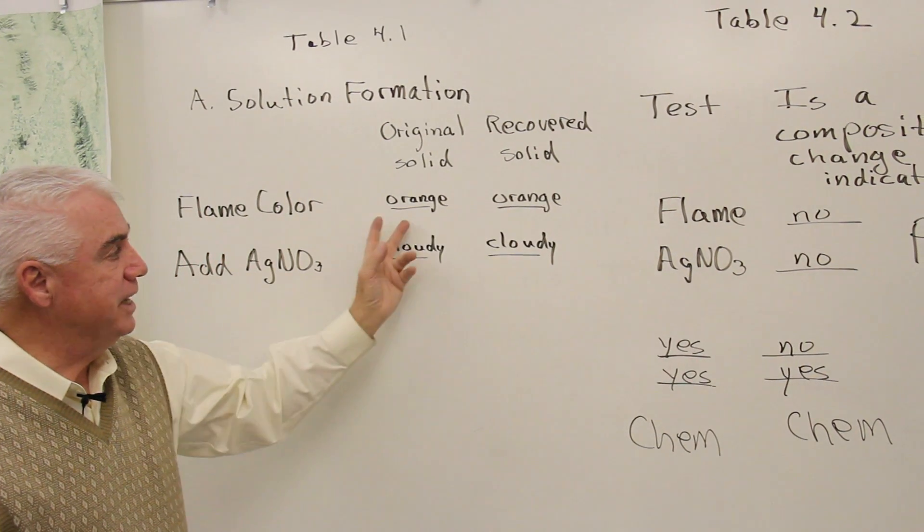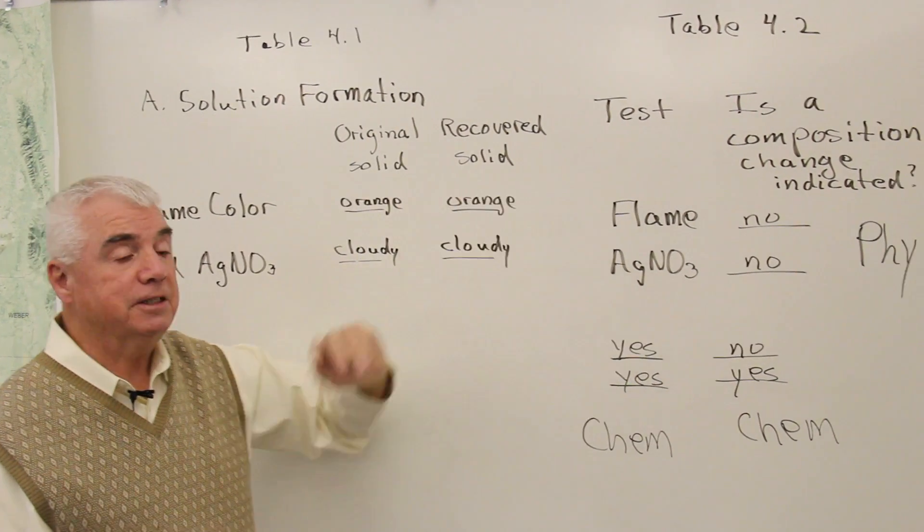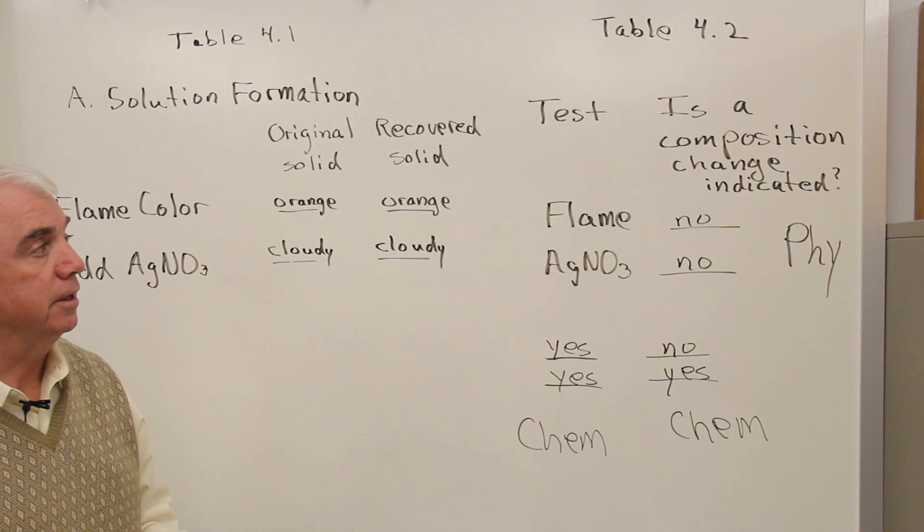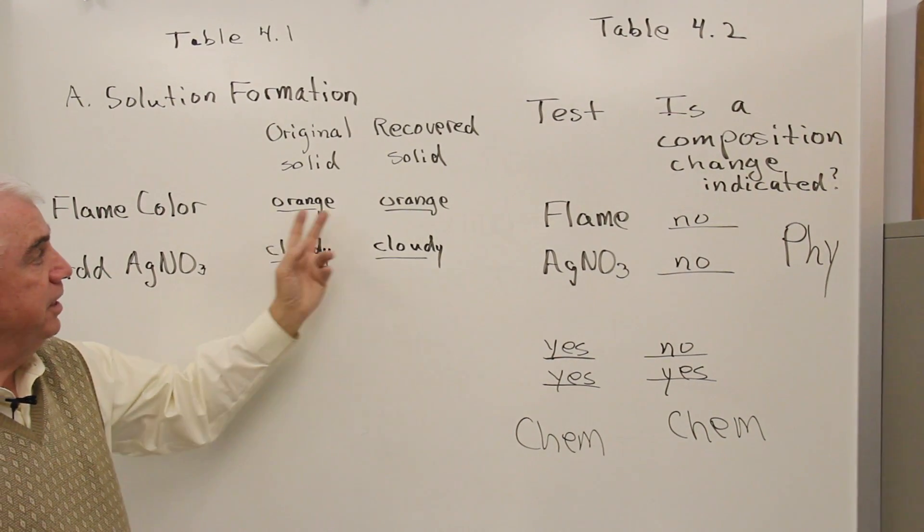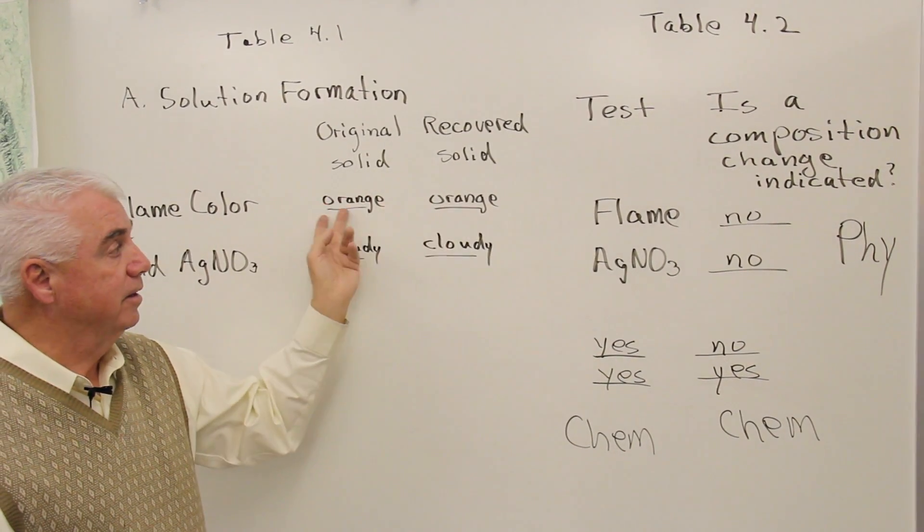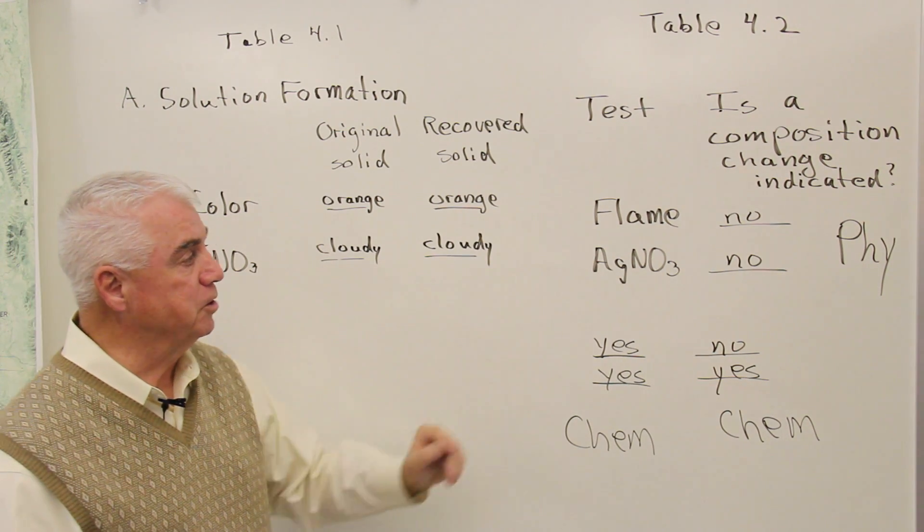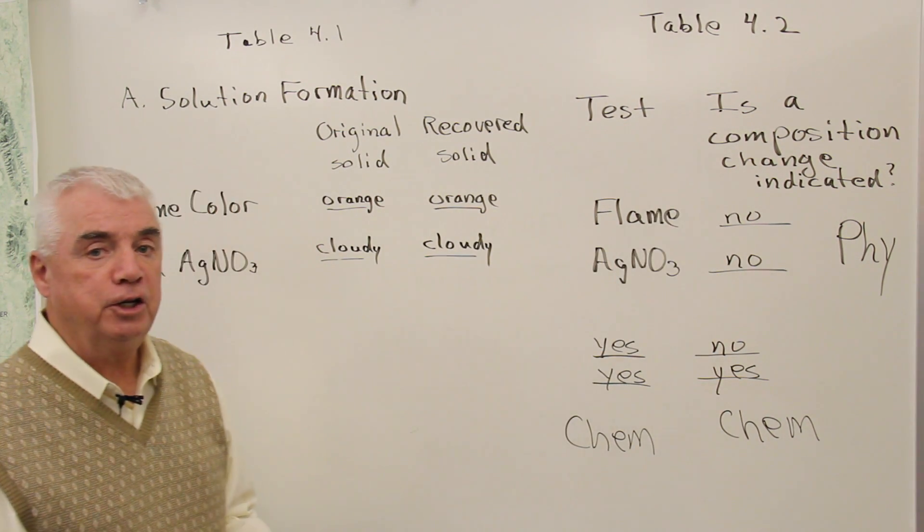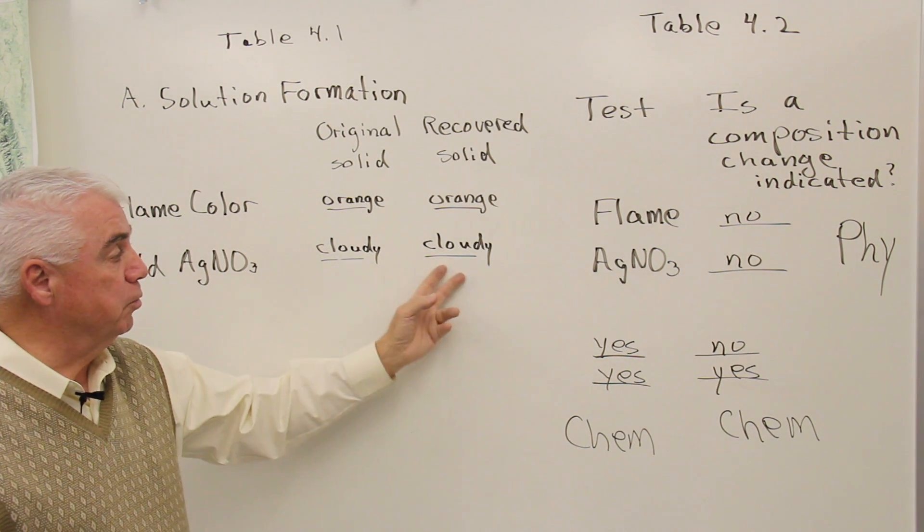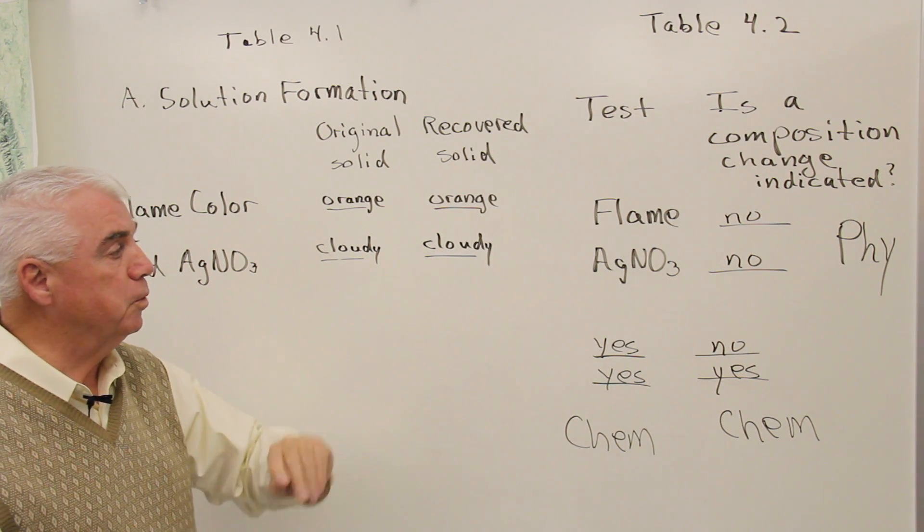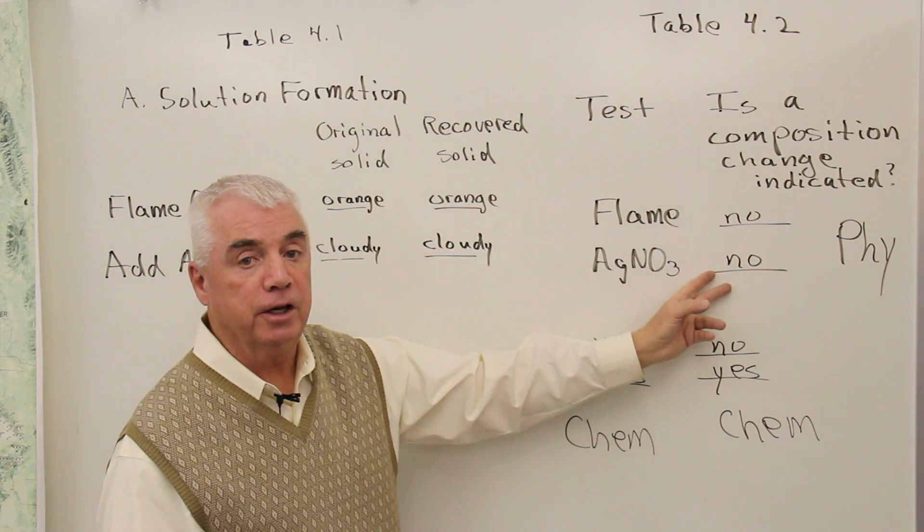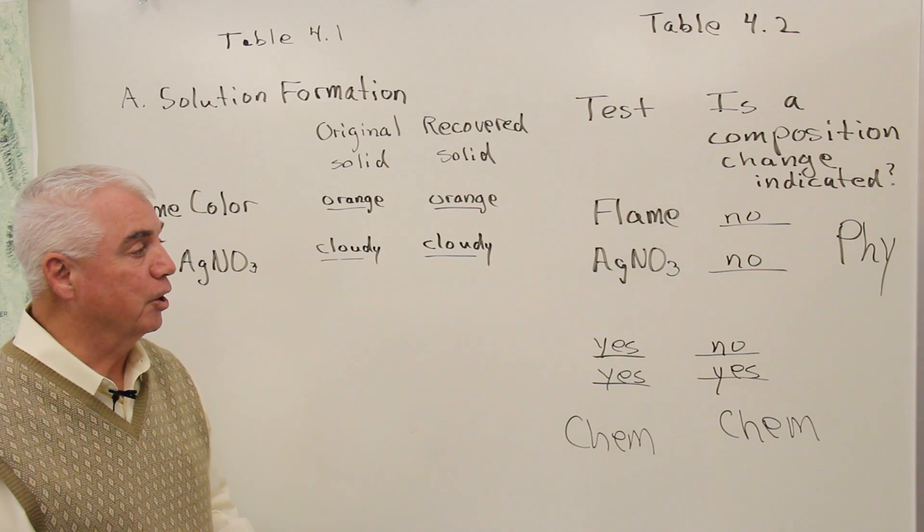And in the next table, 4.2, we take this information and use it to answer the question: is there a composition change indicated? If these two materials gave the same result, we'd say, well no, it looks like this material and this material gave the same result. There's no indication that a change in composition occurred. Same thing here. If this is the result that you get, same as this one, you'd say, well, the reaction with silver nitrate doesn't give any indication that a change in composition occurred.